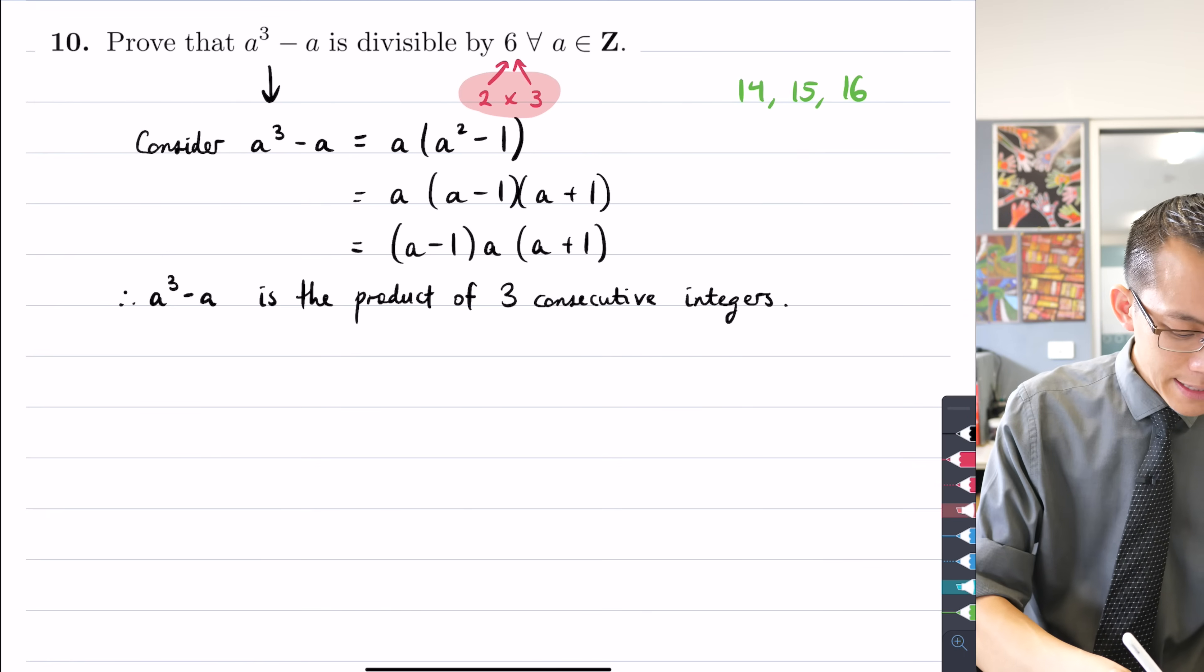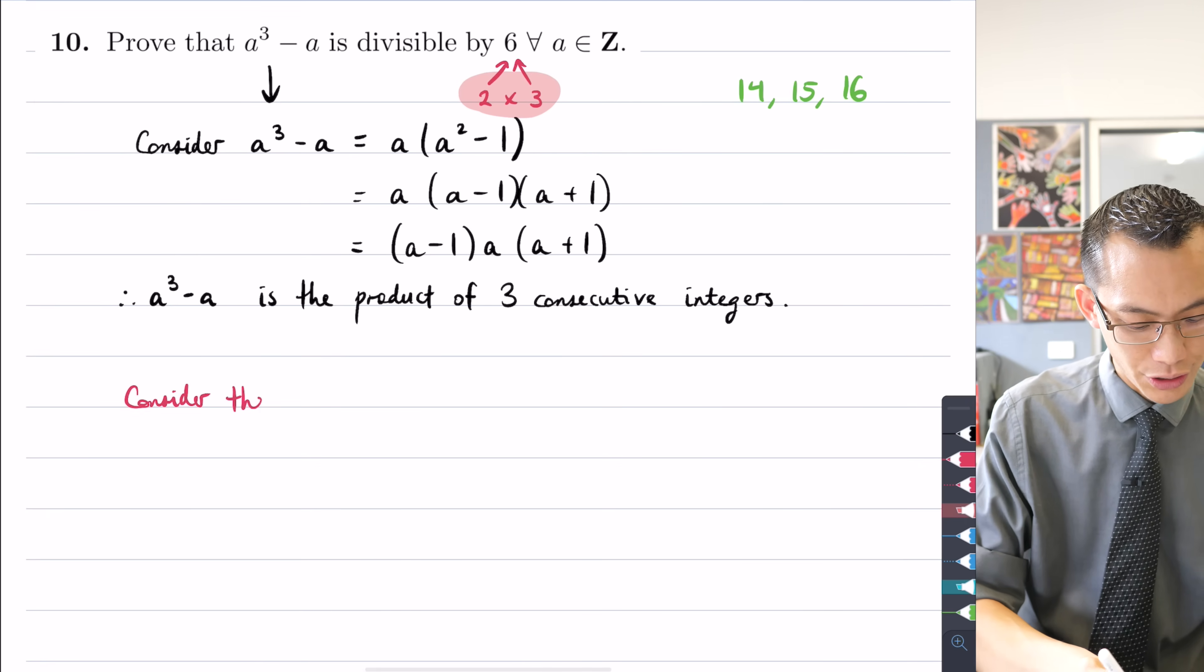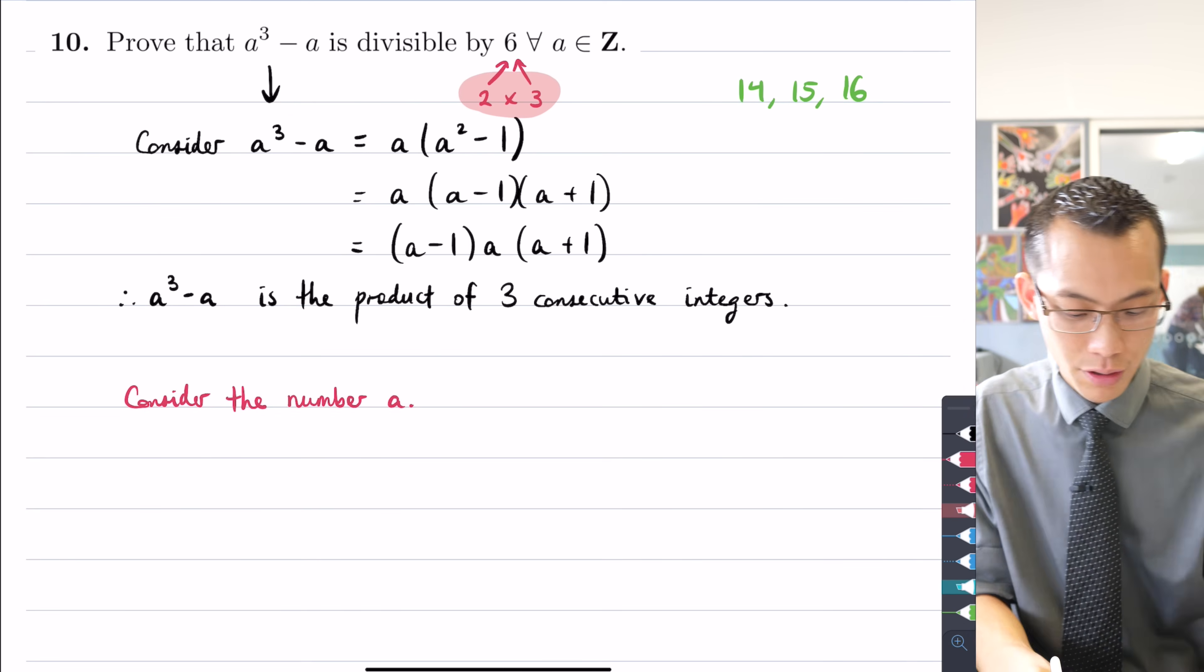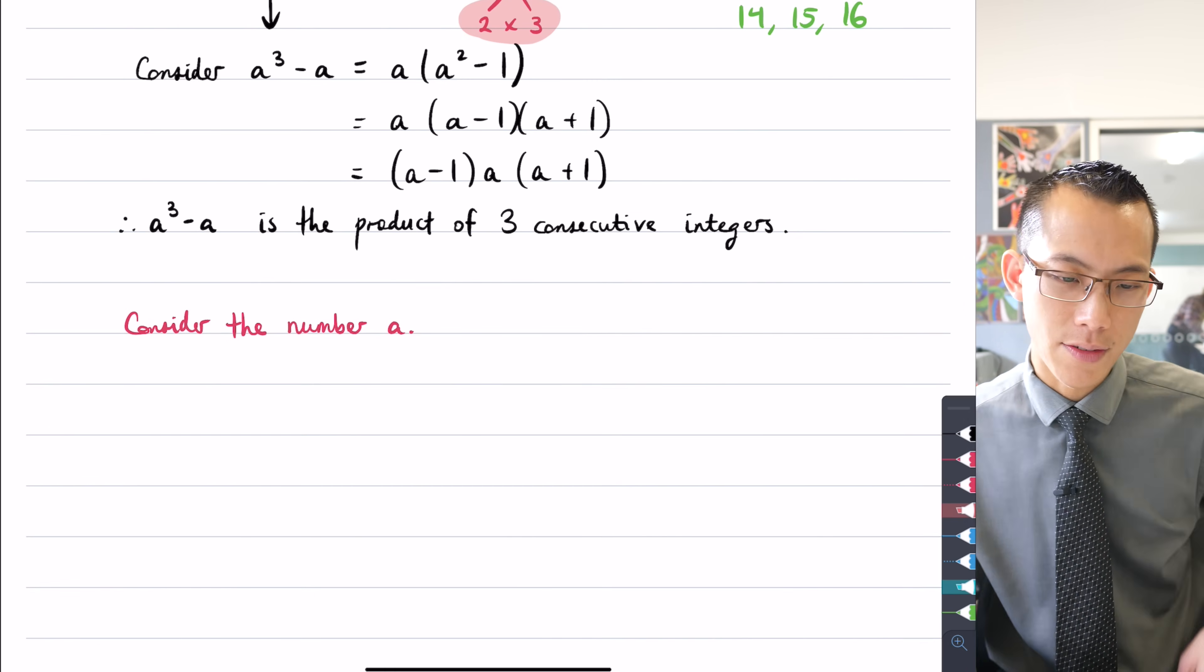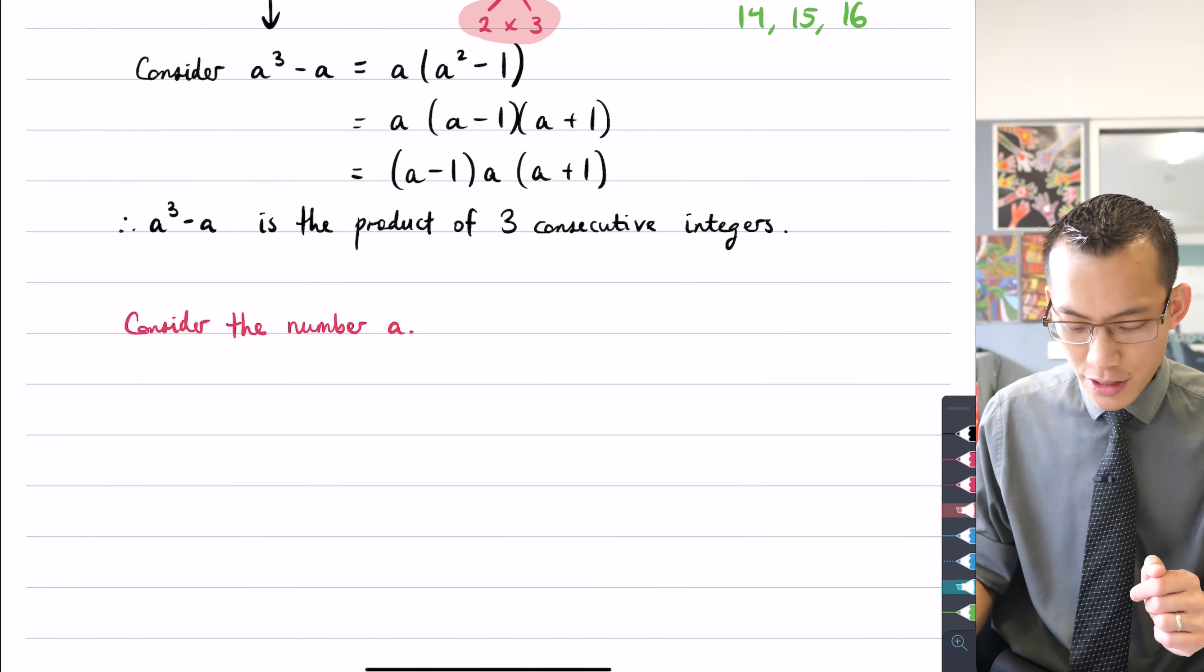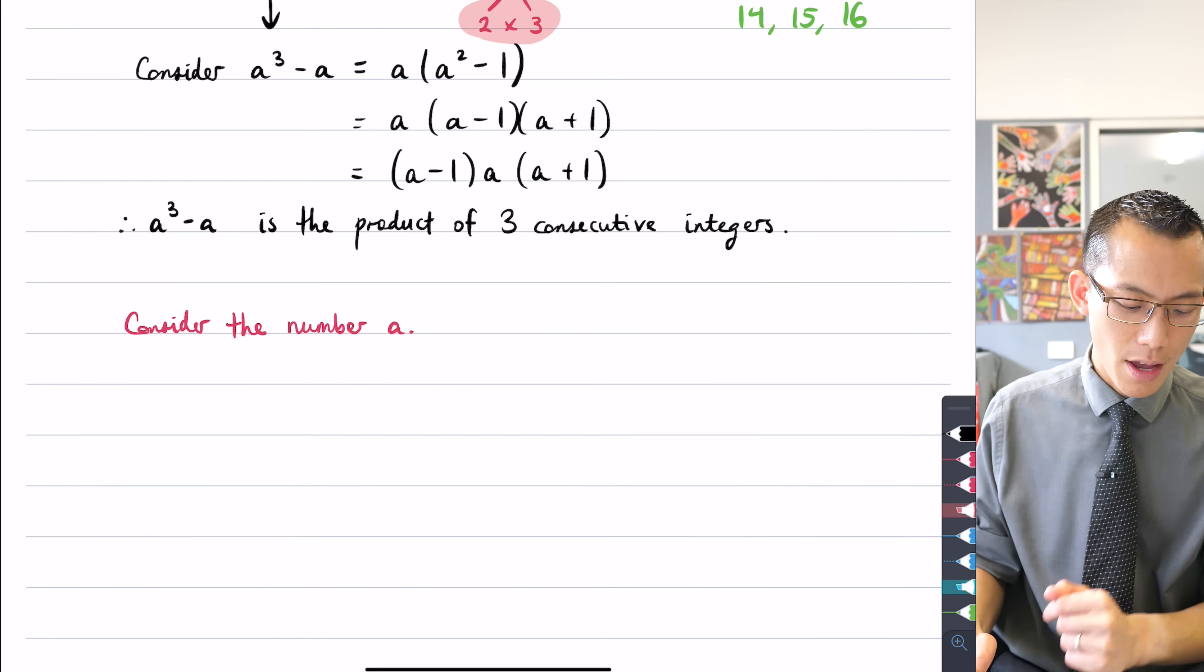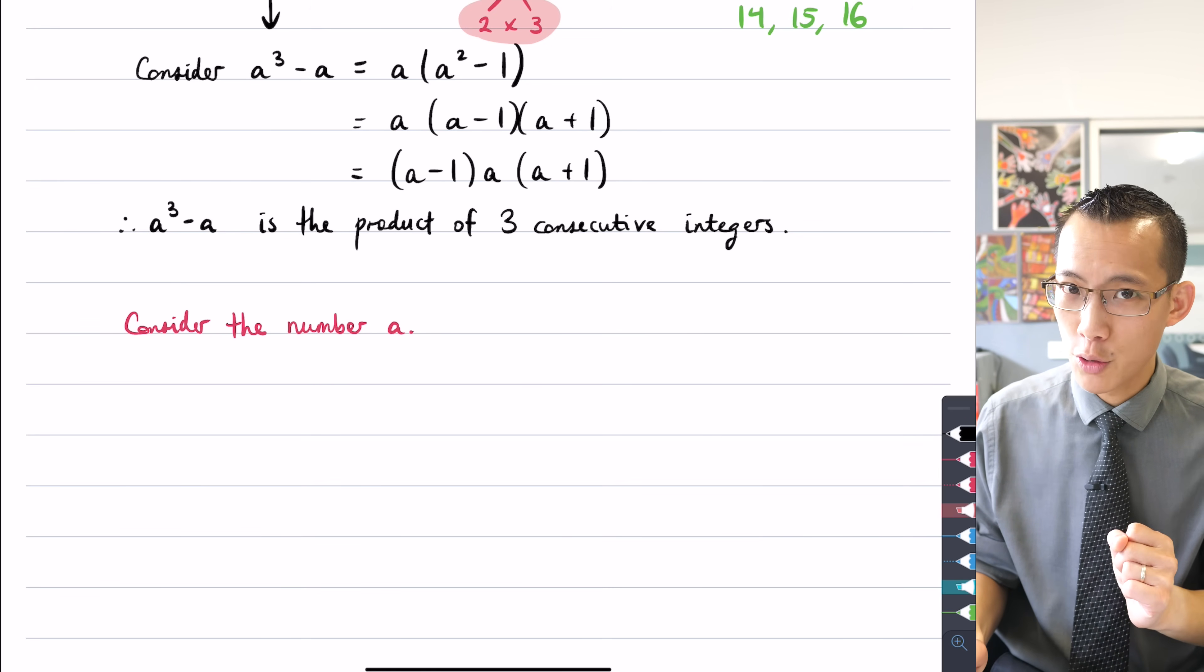Firstly, let's actually put the spotlight on this number a that we're actually including in our expression a³ - a, and also writing it as (a-1)a(a+1), product of three consecutive integers. What I can say is to prove, let's do the multiple of two part first. To prove that a³ - a has to be divisible by two.